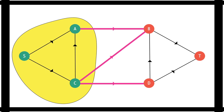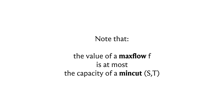So the value of any flow is bounded by the capacity of any cut. In particular, setting F to be the max flow and choosing the min cut tells us that the maximum flow value is bounded by the capacity of the minimum cut. The capacity of the minimum cut thus gives us a target for the maximum flow we can hope to achieve. The interesting question is: is this target always achievable? Can you always push a flow equal to the capacity of the min cut from S to T?